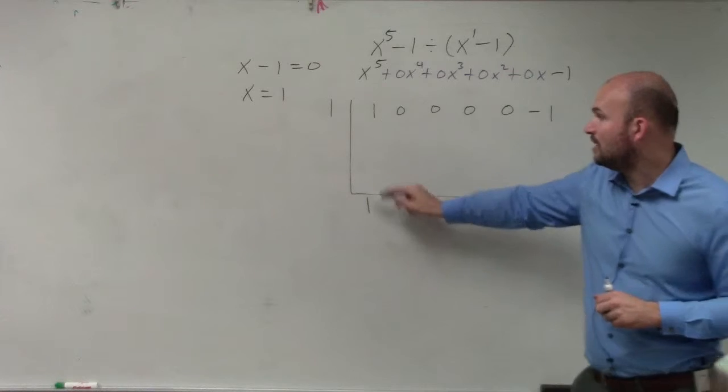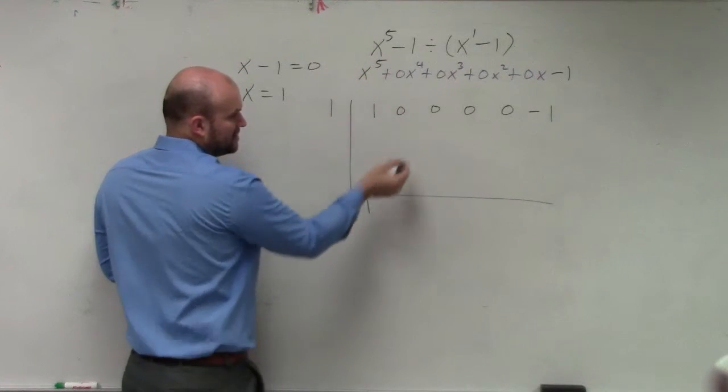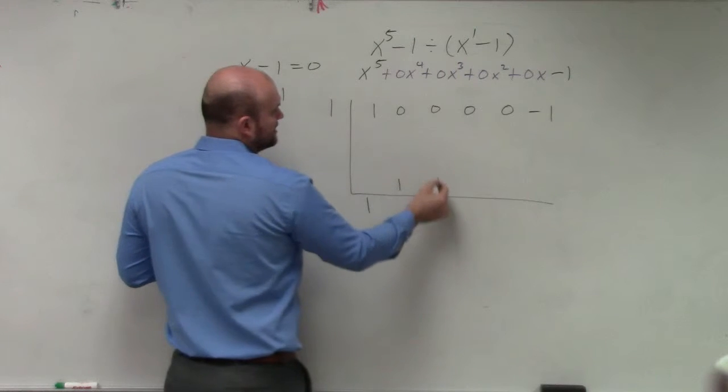You multiply on the diagonal. 1 times 1 is 1. Then you add verticals. 0 plus 1 is 1. 1 times 1 is 1.